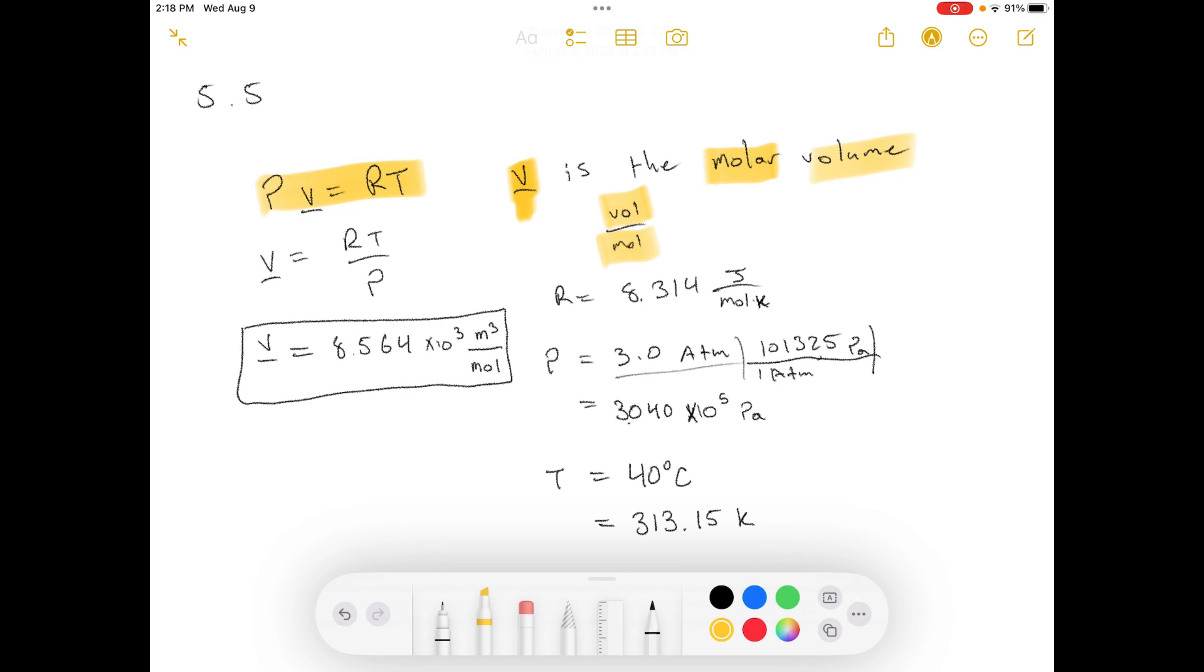So if we're just solving for what the molar volume is, then we have RT over P. R is the gas constant.